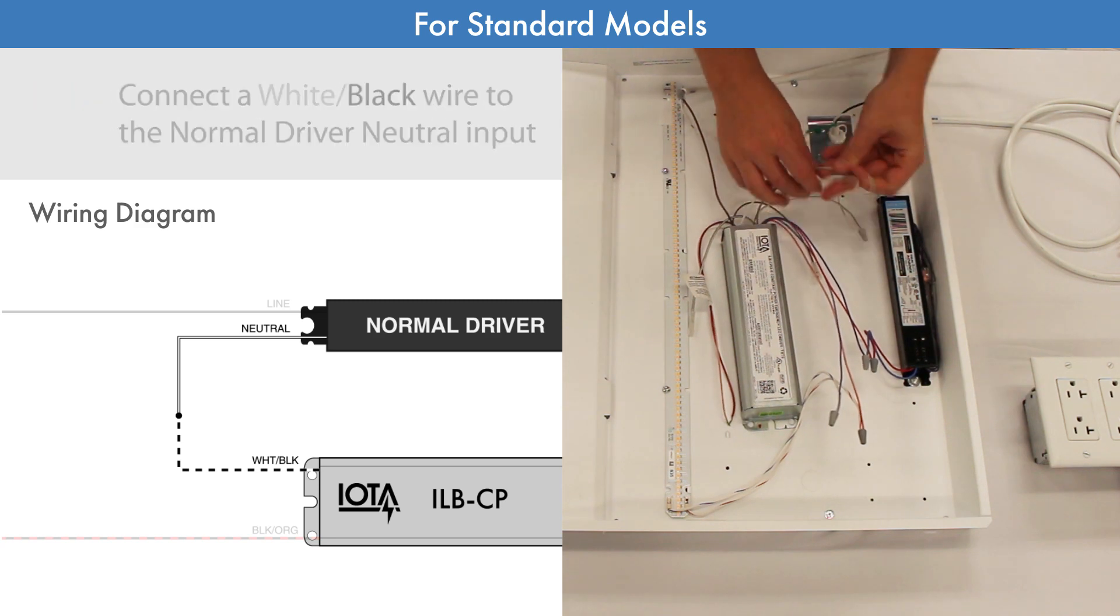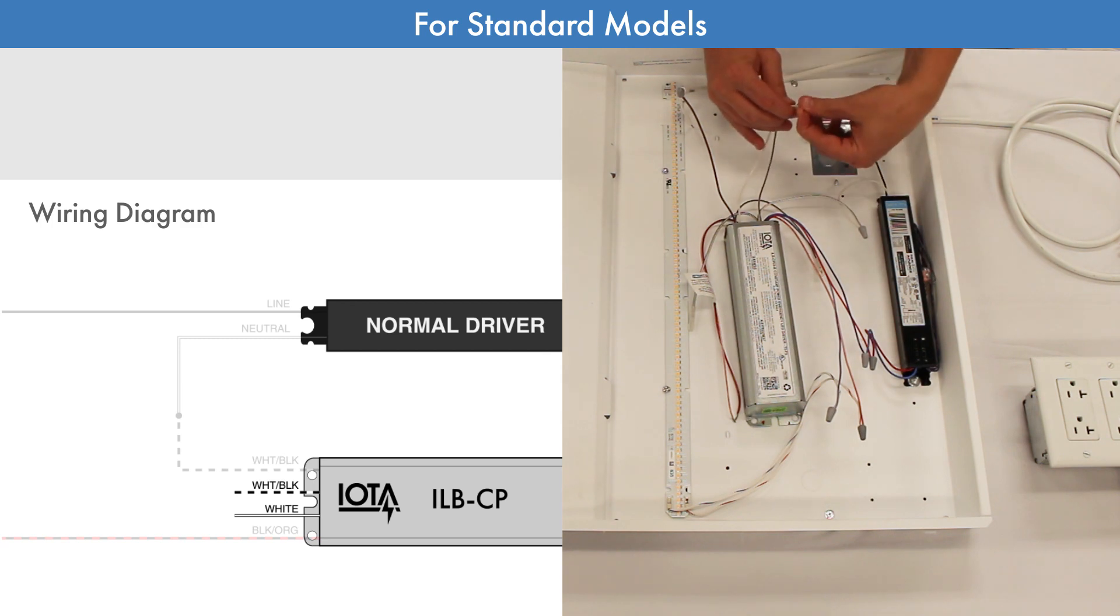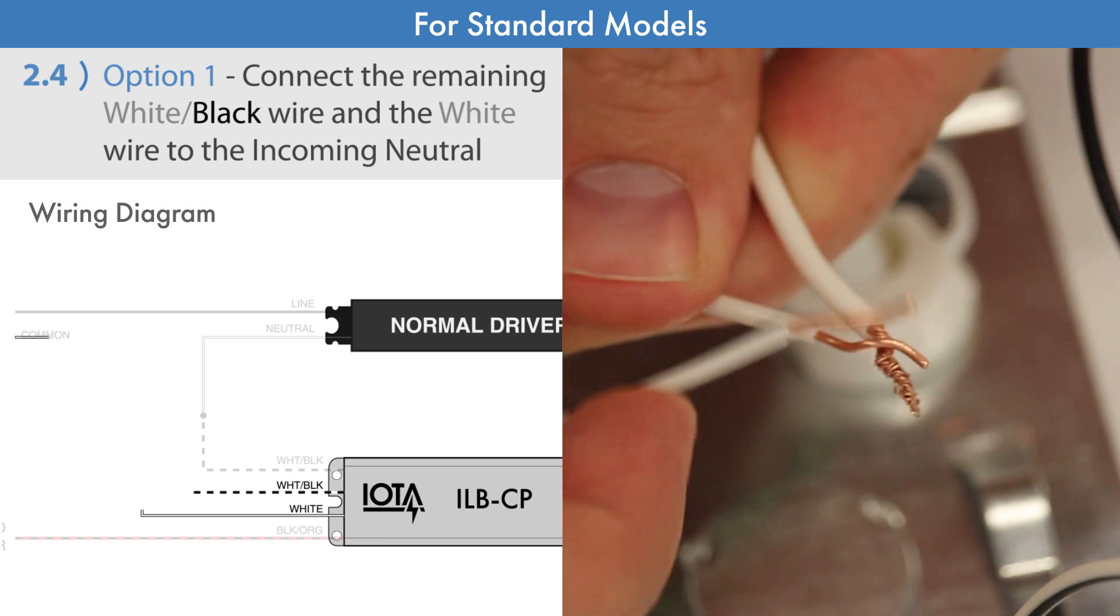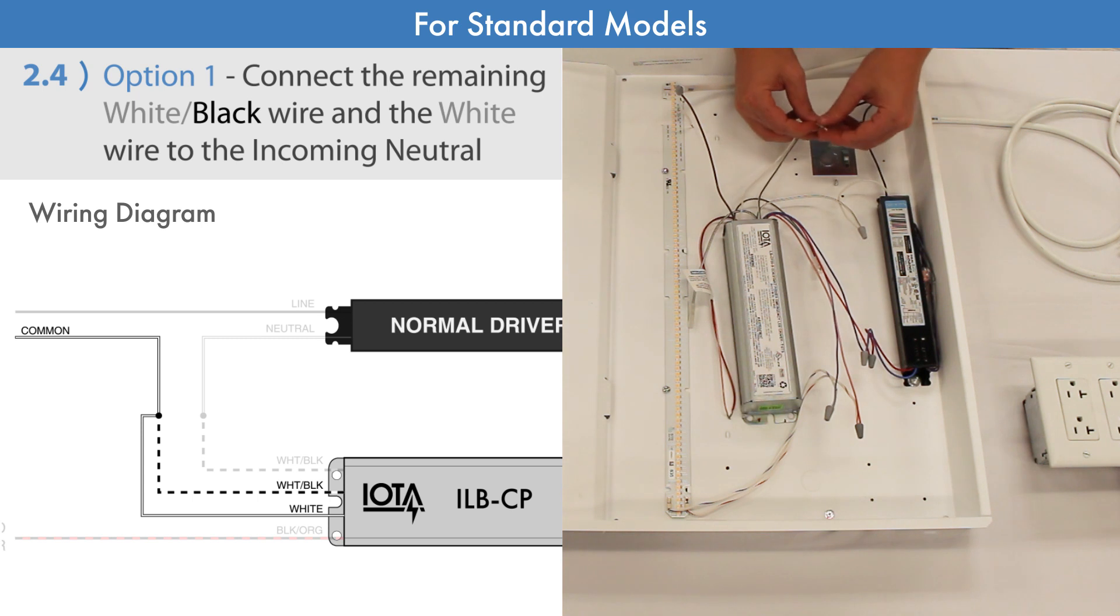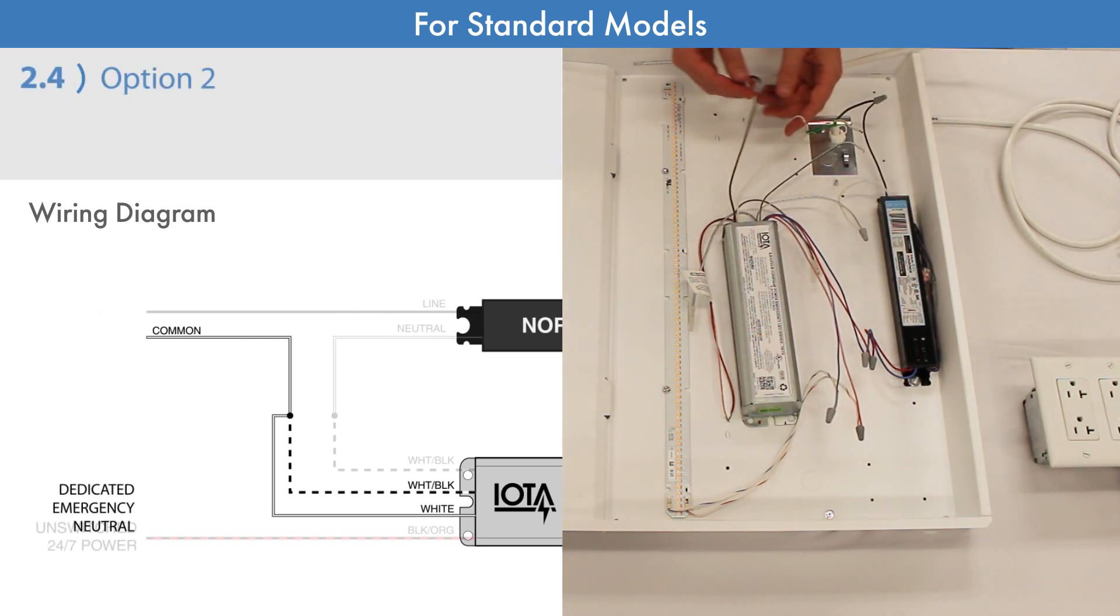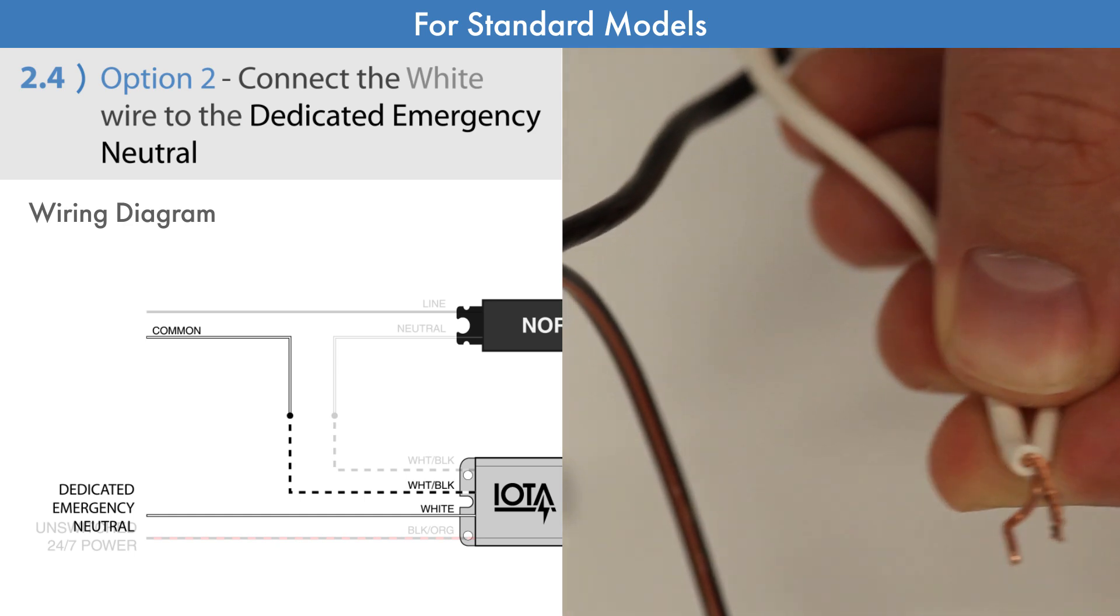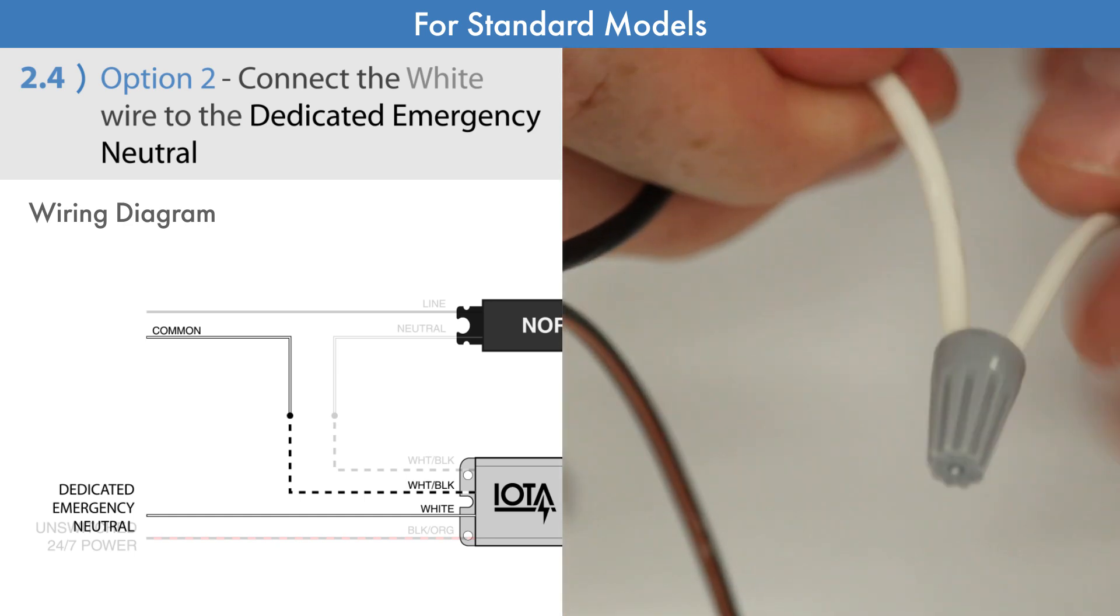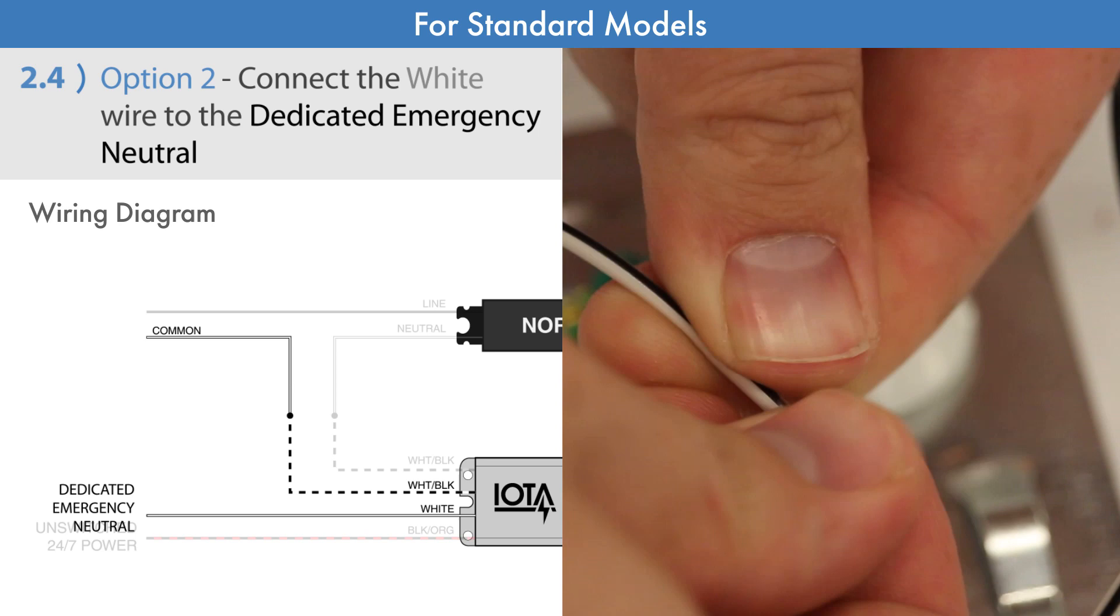Then we will connect the remaining white-black wire and the white wire. Depending on the design of your system, you have two choices for these wires. Typically, you will tie both of these wires together with the incoming neutral wire. However, if your system involves an electrical panel that is dedicated to emergency operation, the white wire may be connected to the dedicated emergency neutral instead. In this example, we have a dedicated emergency neutral, so we will connect the white wire to it, and connect the remaining white-black wire to the LED fixture's incoming neutral.